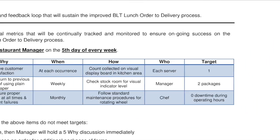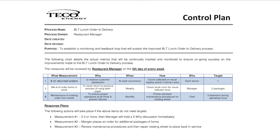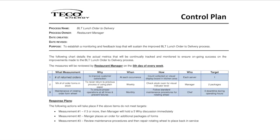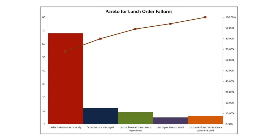Going back to our BLT lunch order, the control plan answers all of these questions and documents how we will maintain the improvements. The starting point in developing a control plan is determining what metrics need to be monitored and controlled. Measurements typically come from data gathered during the analyze phase. Many times, tools like a Pareto chart are useful for identifying key metrics, especially ones that help you control your process.